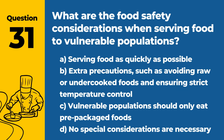Question 31. What are the food safety considerations when serving food to vulnerable populations? The answer is B: Extra precautions such as avoiding raw or undercooked foods and ensuring strict temperature control. Vulnerable groups require more stringent food safety measures to protect their health.